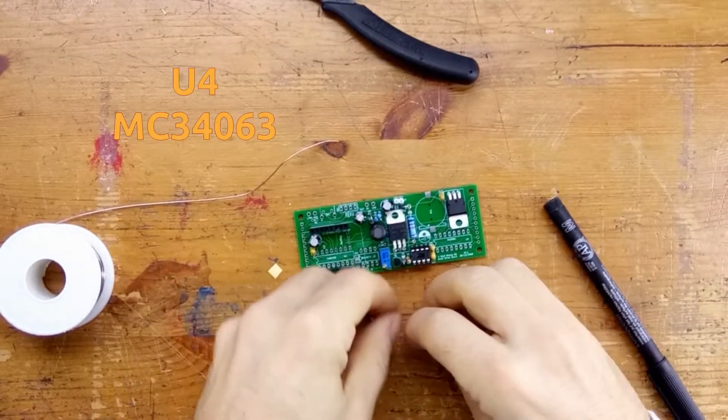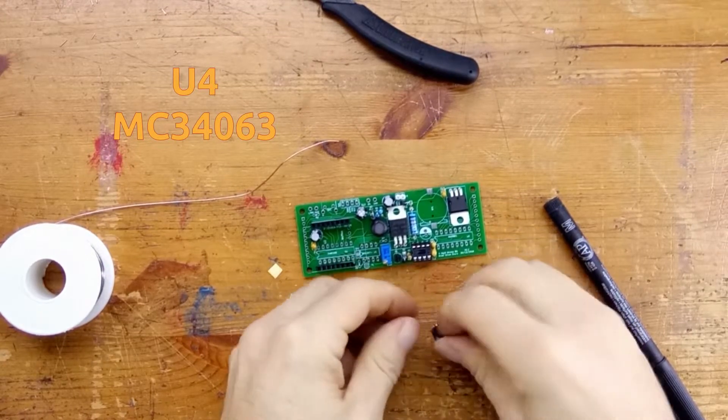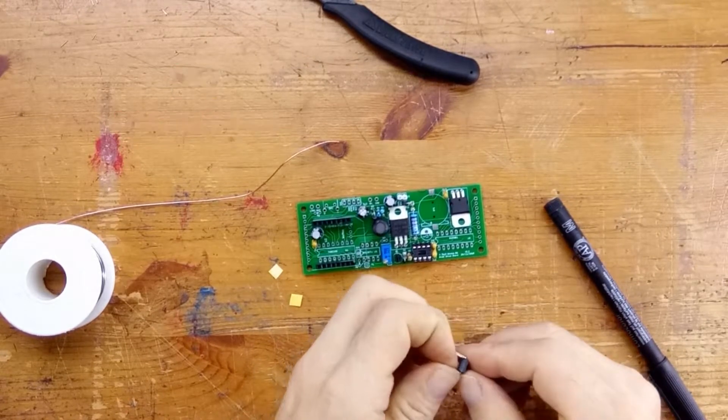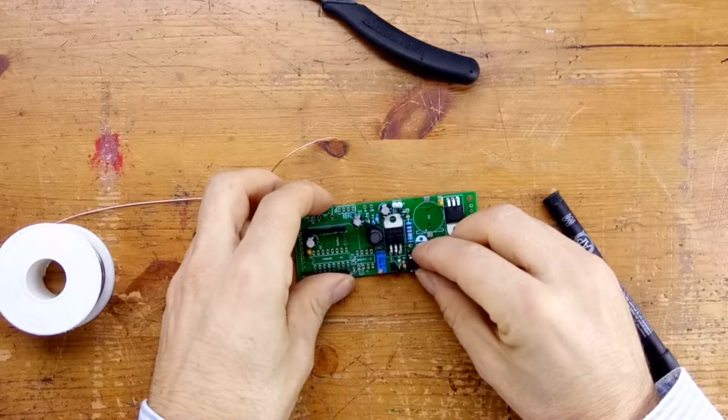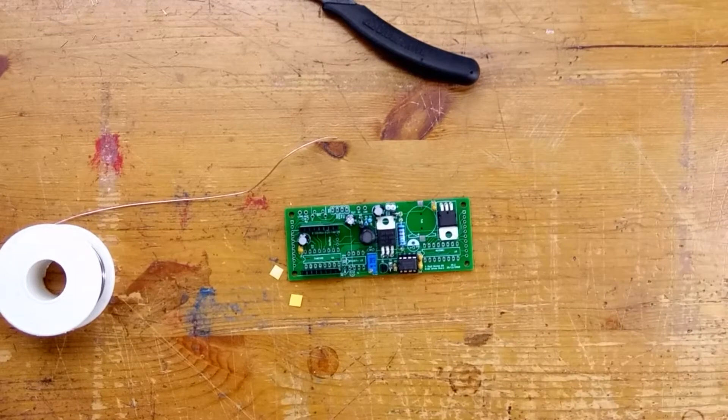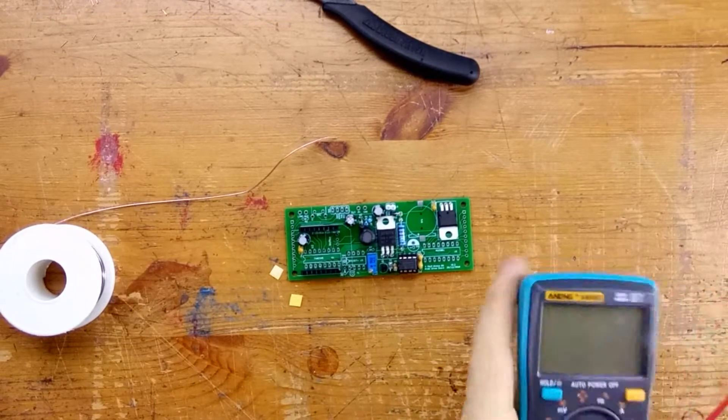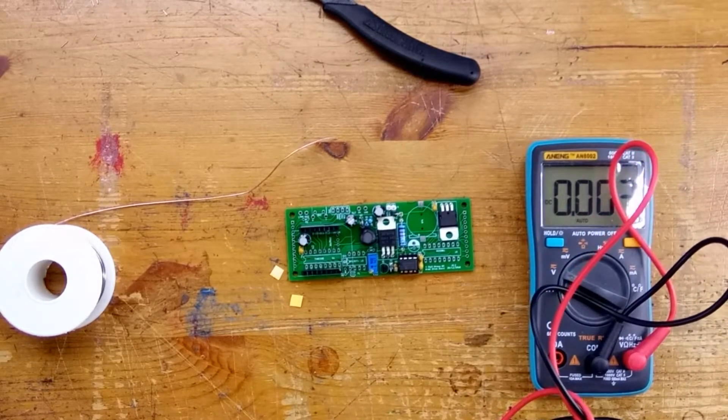Now we come to the point where we put in the MC34063 into its socket. We have to form the leads a little bit because they come from the factory splayed. We form the leads and put it into the socket, again making sure that the notch or the dot is next to the notch side. And now we can prepare to do the test.